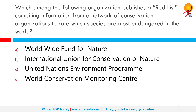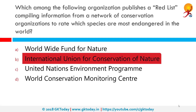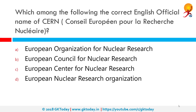Which among the following organizations publishes a Red List compiling information from a network of conservation organizations to rate which species are most endangered in the world? The Red List of Threatened Species, also known as the Red List or Red Data List, was founded in 1964 and has evolved to become the world's most comprehensive inventory of the global conservation status of biological species. It uses a set of criteria to evaluate the extinction risk of thousands of species and subspecies, and is published every year by IUCN, the International Union for Conservation of Nature.